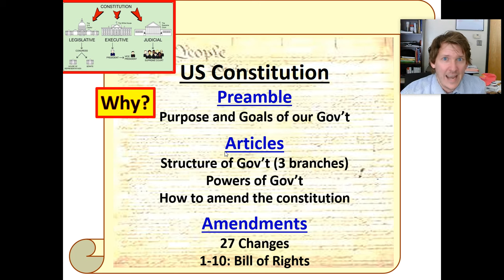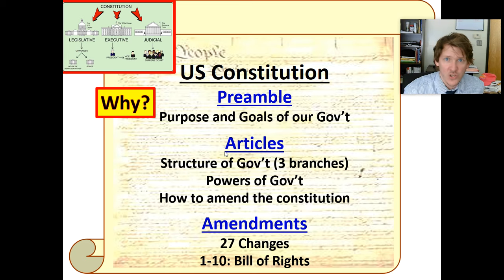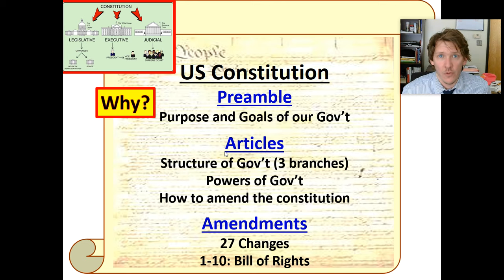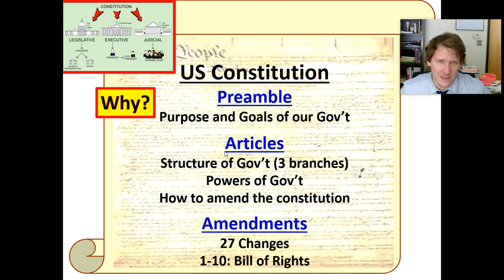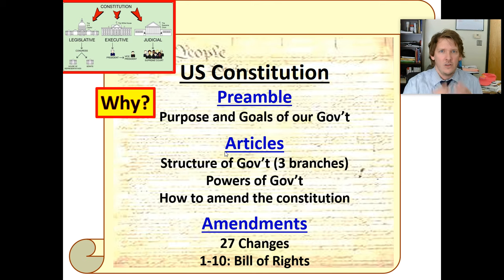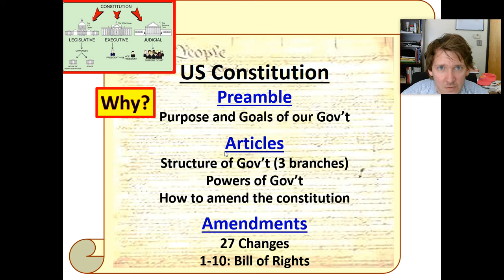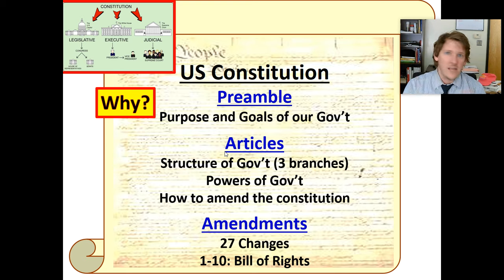Another way of categorizing the parts of the constitution is to say the preamble answers the why — why did we create a government and why do we have a government? Every single day you could ask, why do we have a government today? You look at the preamble and it answers all those questions: we have a government because we need to provide for the common defense, we need the military, we need domestic tranquility, we need peace in the United States. Same answer every single day.